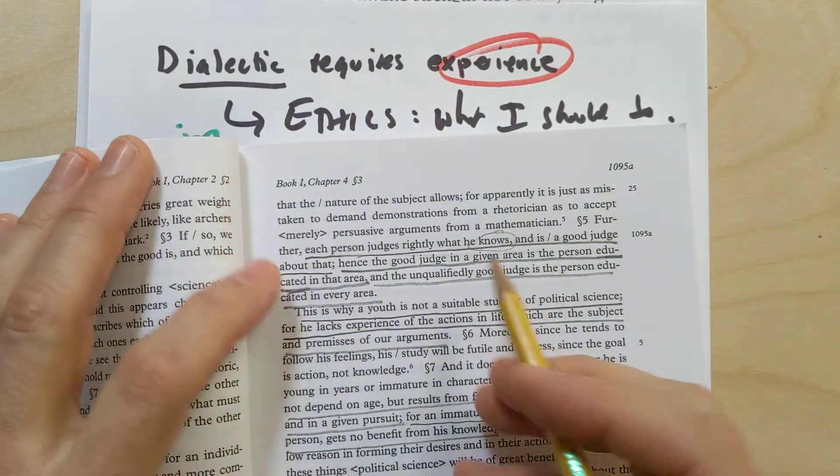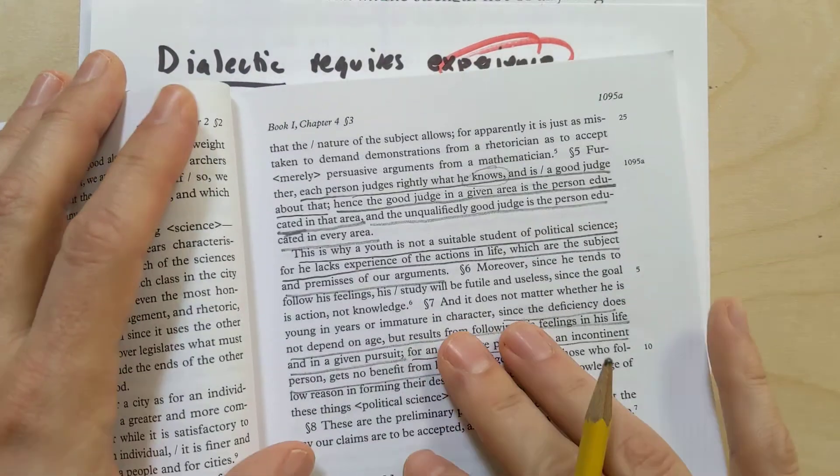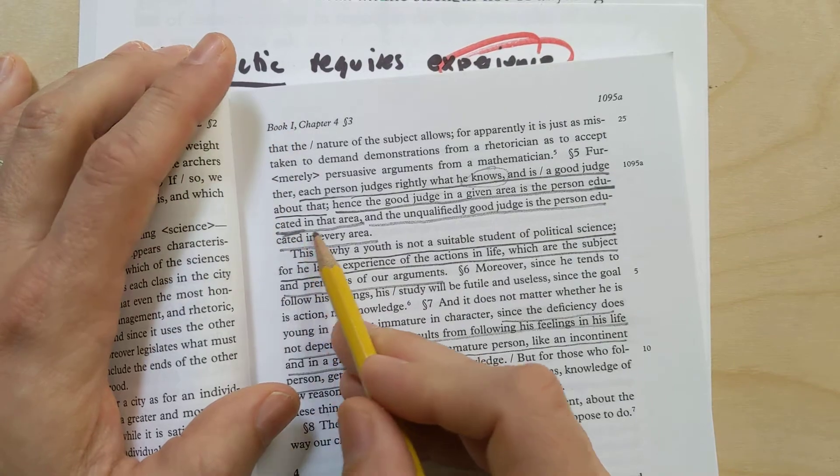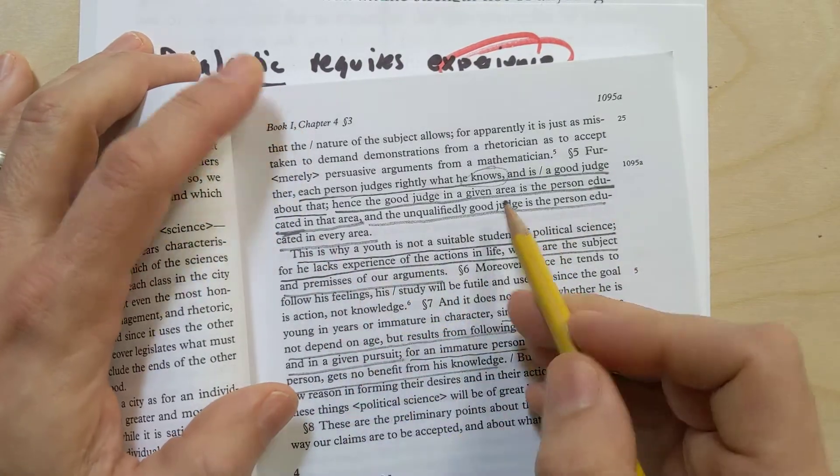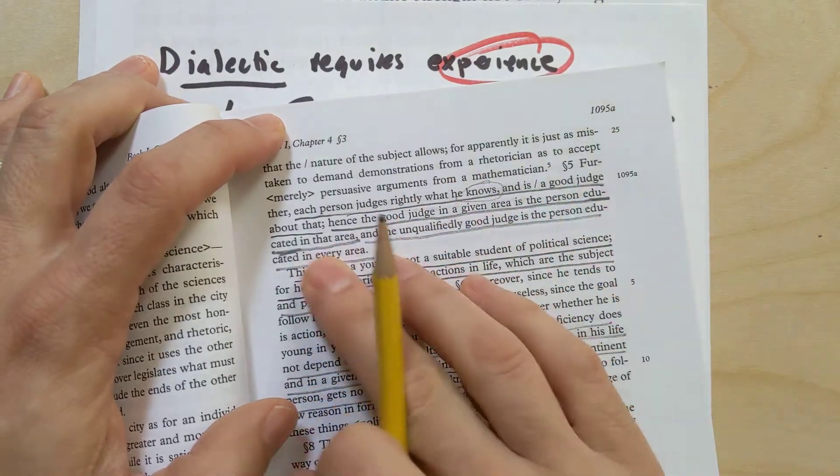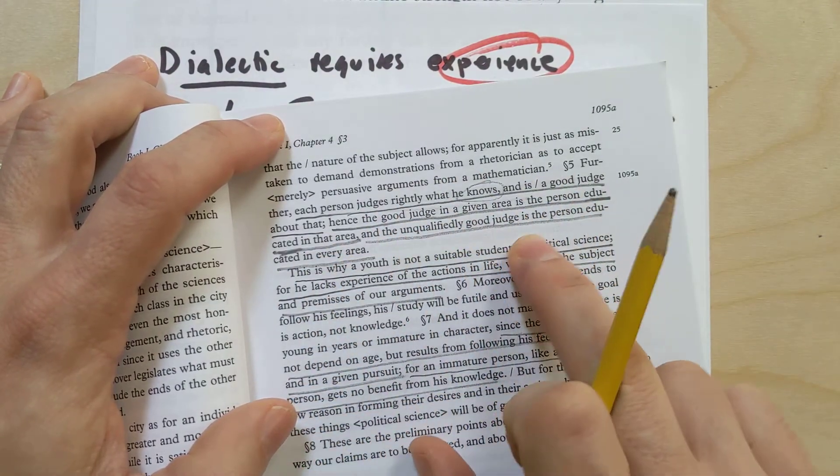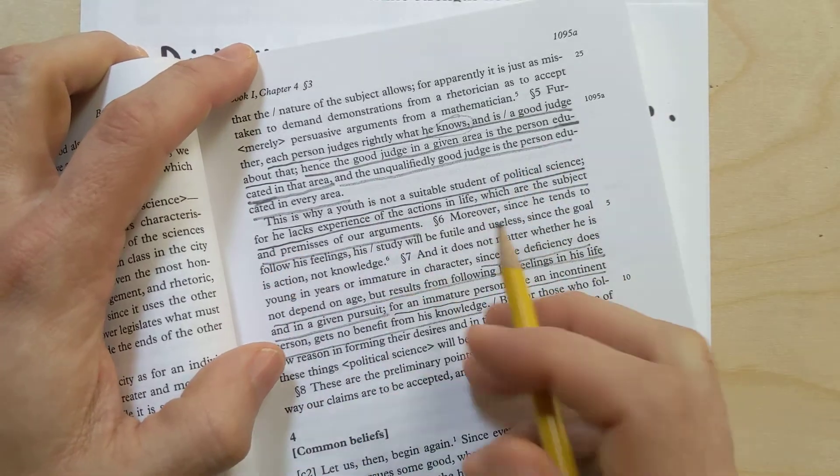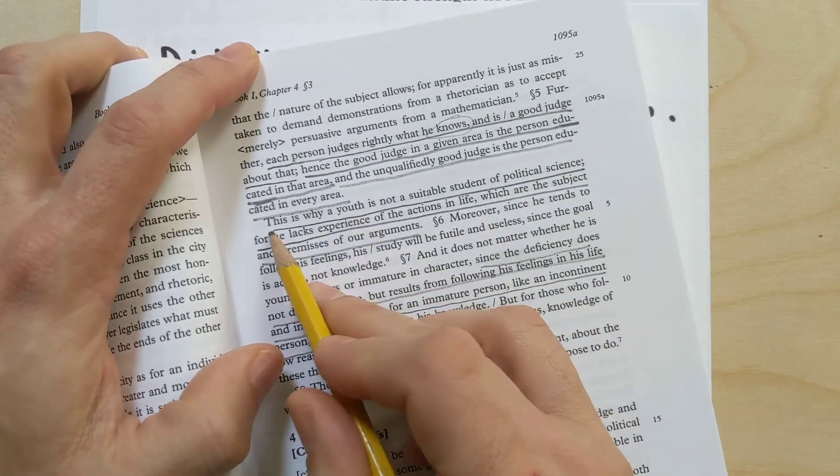First of all, someone's going to be educated. And this education doesn't necessarily mean like a ridiculous amount of school education. It's just a familiarity with things. Someone would be an unqualified good judge in the person who's educated in every area. But let's dig deep when he talks about youth.